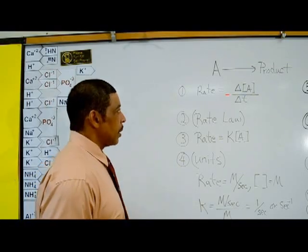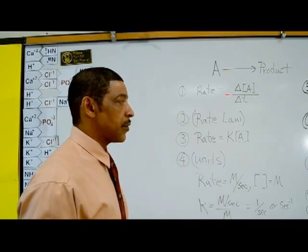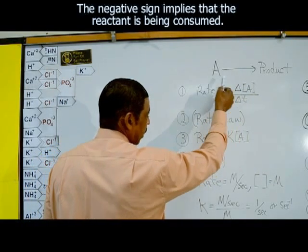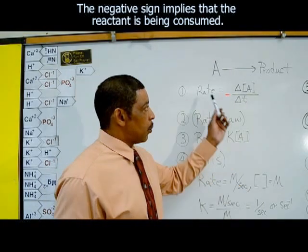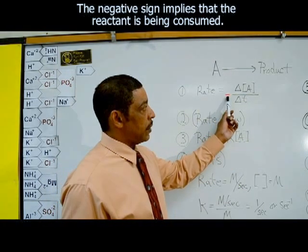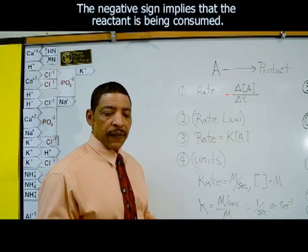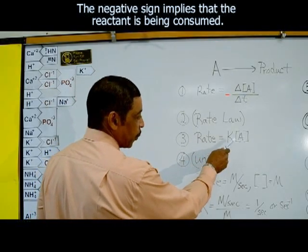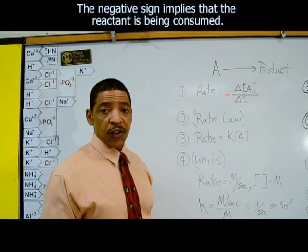A first order rate form depends solely on the concentration of the reactants. The rate of such a reaction may be determined as follows, where rate is equal to the disappearance of reactant A over the change in time. So we may write: rate is equal to negative change in concentration of A divided by the change in time. And for a first order reaction, the rate law is written as rate is equal to the rate constant times the concentration of A, raised to the first power.